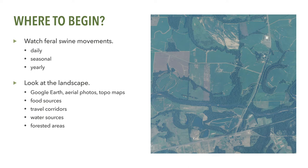To begin, it's sometimes worth investing the time to look at your property from the 20,000-foot level to identify the relative locations of streams and rivers or other areas that may serve as movement corridors for feral swine, hardwood forests that may provide cover and food, and agriculture fields where feral swine have been a problem.